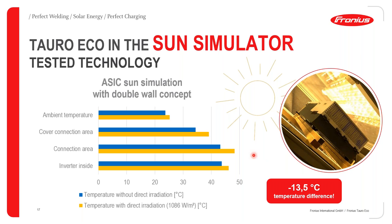Remember, your connection area will be much higher than your cover connection area because it's the point at which cables enter the inverter, and cables heat up because they're carrying a lot of current. When we measured the inverter inside, it was actually cooler than the connection area by 13.5 degrees Celsius, which is quite a significant difference, and this is thanks to the active double wall cooling.